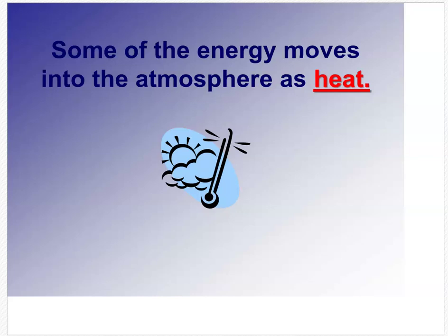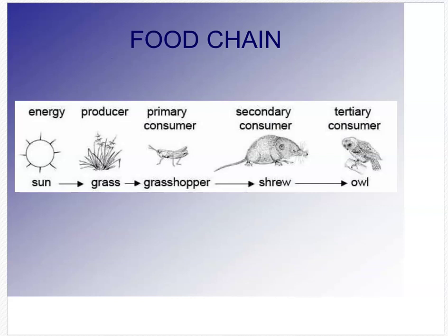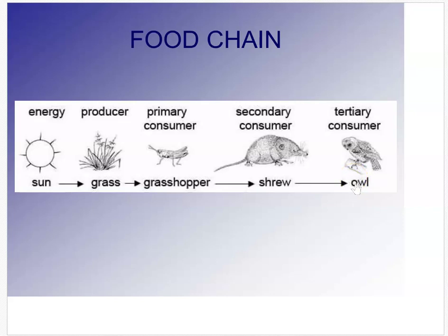Animals like whales have a layer of fat that stores energy, keeping their body temperatures up so they can live in cold or warm weather. Now, the food chain is very important. Energy comes from the Sun into the grass — the grass is the producer. The first consumer is the grasshopper, which eats the grass. The shrew is the secondary consumer, eating the grasshopper. The shrew is then eaten by the owl, making the owl the tertiary or third-order consumer.